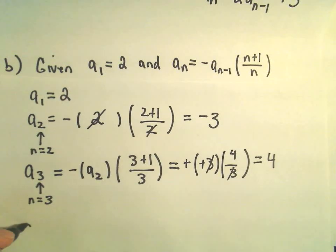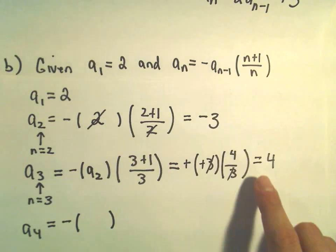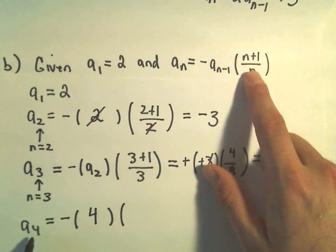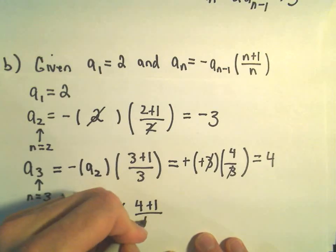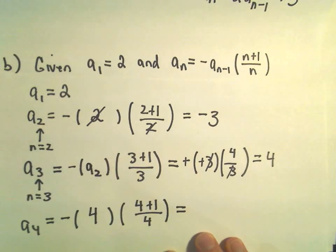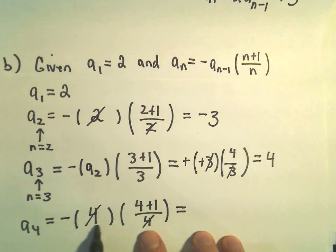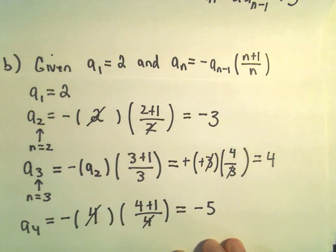For a sub 4, the formula says we take the negative of our a sub 3, and a sub 3 is 4. Everywhere there's an n, I'm plugging in 4, so we get 4 plus 1 over 4. The 4 in the denominator cancels with the factor out front, leaving 5 in the numerator of our fraction, but again we have this negative sign. So it looks like we'll get negative 5.